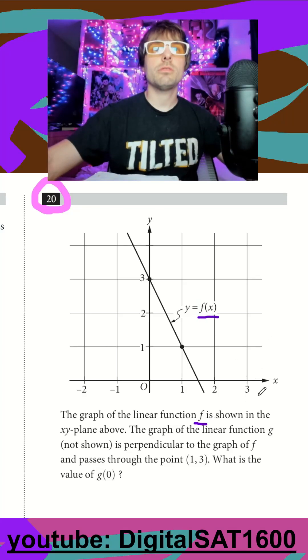I see we have a function f shown, and we also have a function g that is perpendicular to the graph of f. So before I even read the rest of this, I need to get my slope of f so I can figure out what's perpendicular to it.